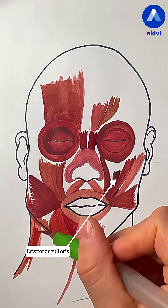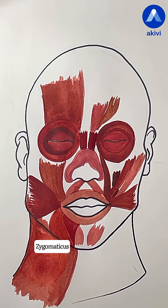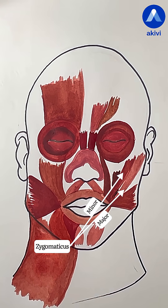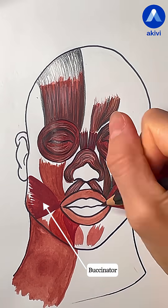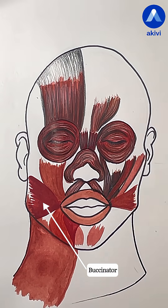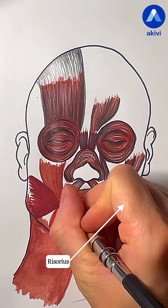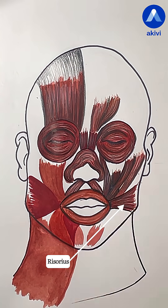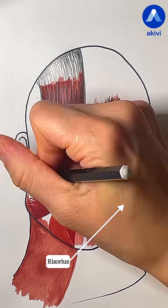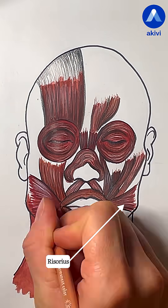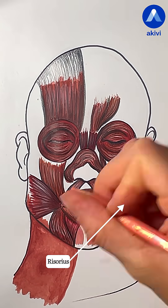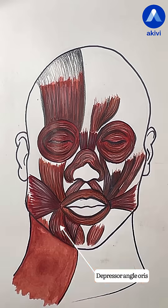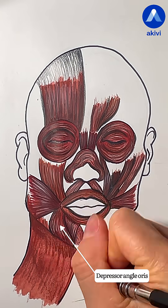The zygomaticus major and minor pull the upper lip up and outward. The buccinator is a key muscle for blowing, chewing, and keeping the cheek firm. The risorius pulls the corner of the mouth outward and slightly backward — it's often considered the smile muscle, especially for a wide grin.